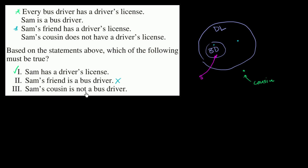Sam's cousin is not a bus driver. They told us Sam's cousin does not have a driver's license, so Sam's cousin is sitting out here with the set of people who do not have driver's licenses — and so he can't be a bus driver, since all bus drivers have driver's licenses. So this last statement is true as well. Statements one and three must be true.